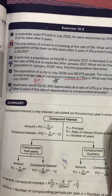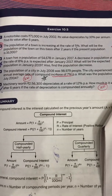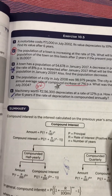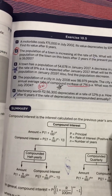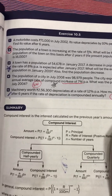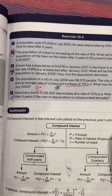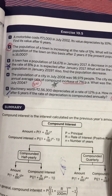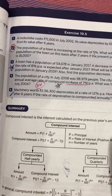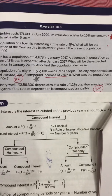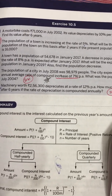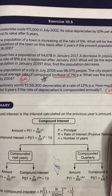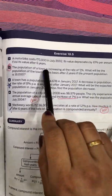In every question, the statement will mention whether the value is decreasing or increasing. Also note: in previous exercises, we used cost as the principal. In this exercise, population of a town, country, or state can also be taken as the principal — so don't get confused.